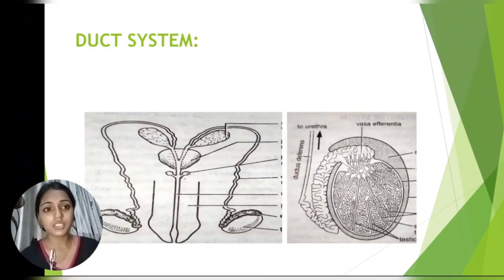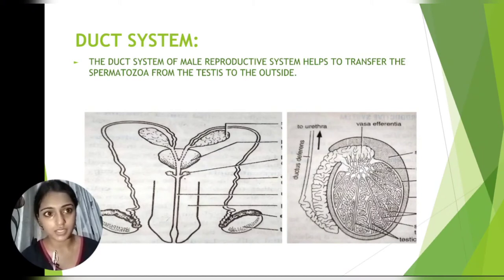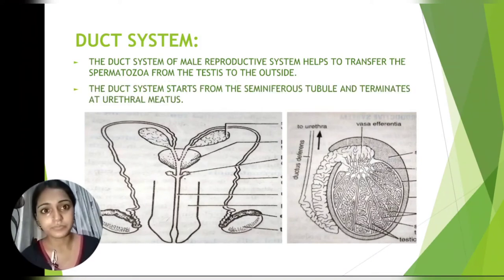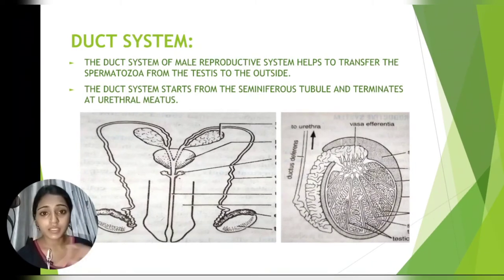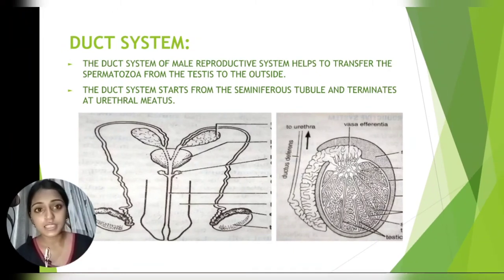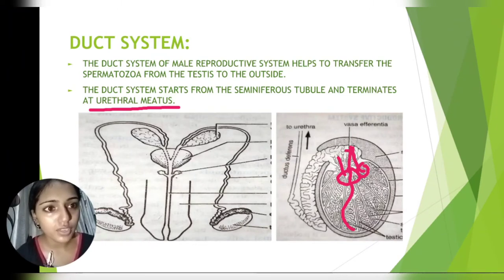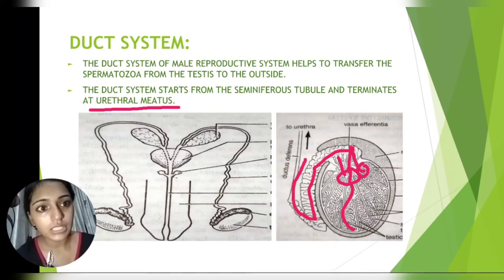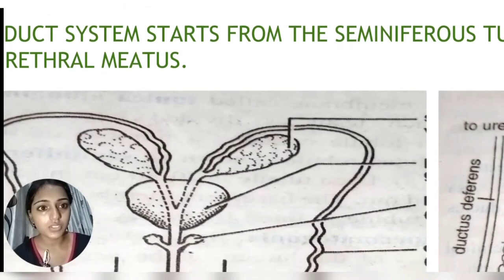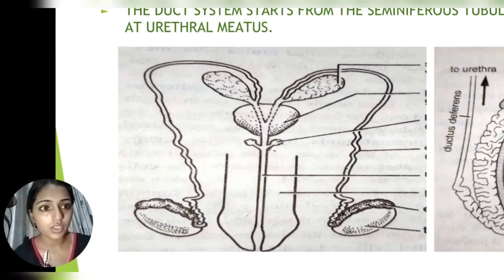Now we will study about the duct system. The duct system of the male reproductive system helps to transfer spermatozoa from the testes to outside the body. It starts from the seminiferous tubules and terminates at the urethral opening, called the urethral meatus. The seminiferous tubules open into the rete testes, which open into the vasa efferentia, which then open into the epididymis. You can clearly see the passage or the duct system in this picture.